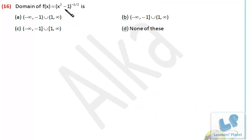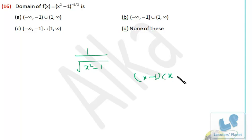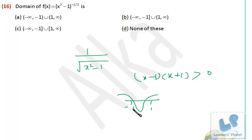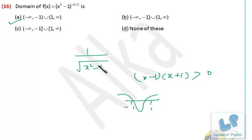Now this one: x squared minus 1 raised to minus half. This can be written as 1 over root of x squared minus 1. x squared minus 1 can be written as (x minus 1)(x plus 1), and that should be strictly greater than 0 — not equal to — because this is in the denominator. So the range is minus infinity to minus 1 union 1 to infinity, but minus 1 and 1 both will not be included. So minus 1 and 1 both should not be included because that will make the expression 0, meaning the denominator will be 0 and the function will not be defined.